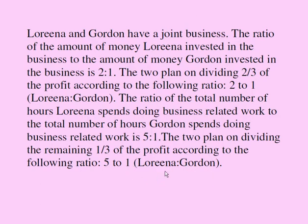Let's summarize this part of the question. Lorena and Gordon are working together. Two-thirds of their profit will be divided between the two in this ratio and the remaining one-third of the profit will be divided between the two in this ratio.